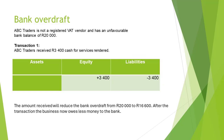The bank overdraft, or in other words, the total the business owes to the bank, will reduce from 20,000 Rand to 16,600 Rand. Therefore, after the transaction, the business owes the bank less money.